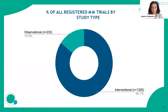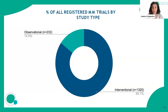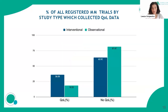Most trials registered are interventional — there may be more observational trials in any clinical disease but not all end up in the registries. Most international trials are registered. Quality of life data is collected more in interventional trials than observational trials, as expected.